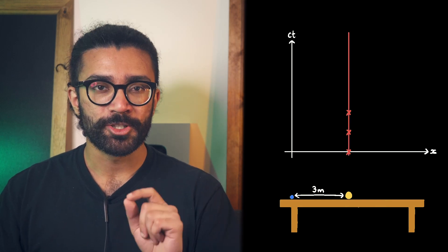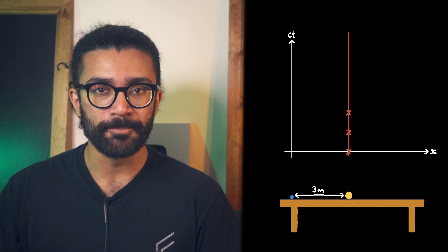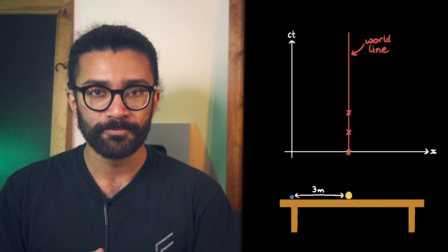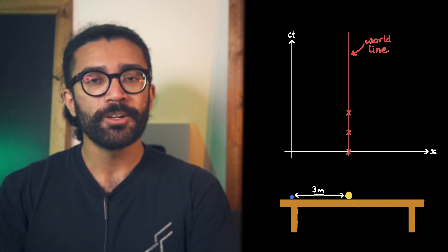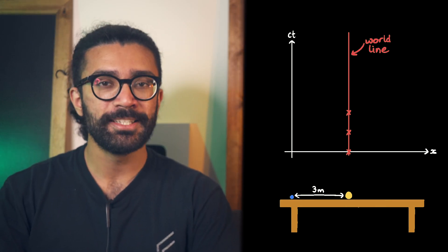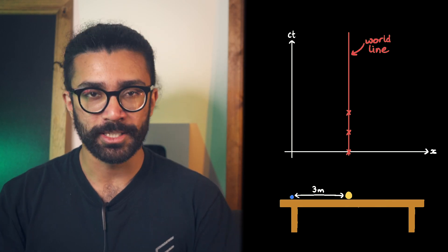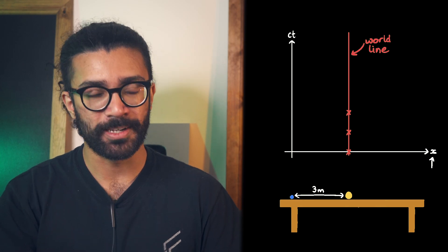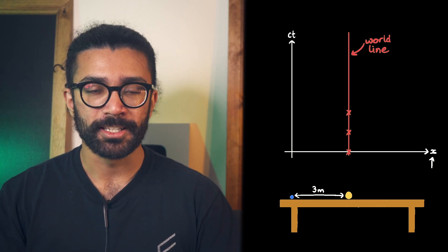We can connect up our dots to show the ball's position at any time. What we've drawn here is known as the world line of our ball. Pretty cool name, right? It's worth noting what we've drawn so far is basically just a distance-time or displacement-time graph, except with the distance or displacement of our object on the horizontal axis rather than the vertical axis,